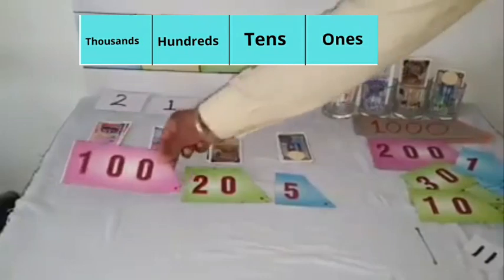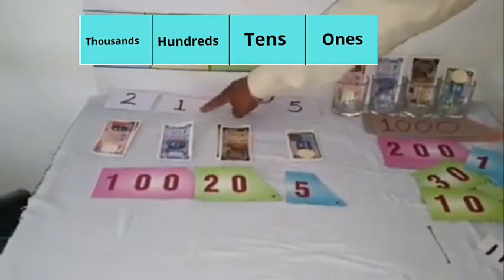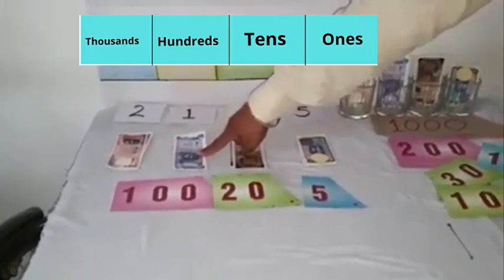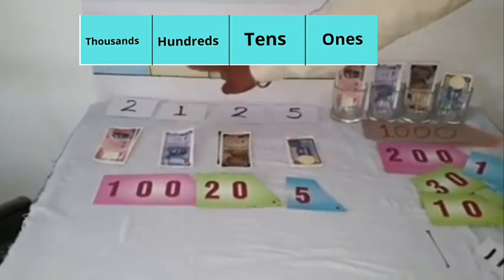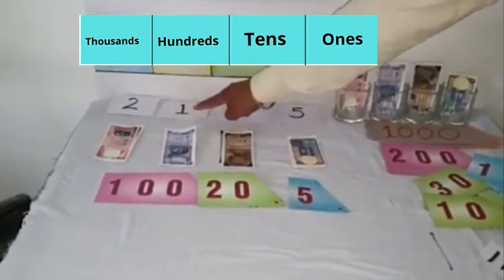Next, at hundreds place, we have 1. The value of 1 note of 100 rupees is 100. Man card is of 100, so place value of 1 at hundreds place is 100.